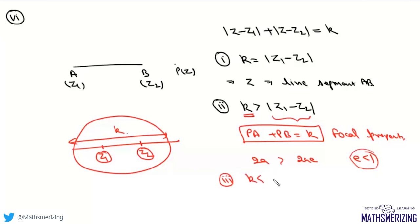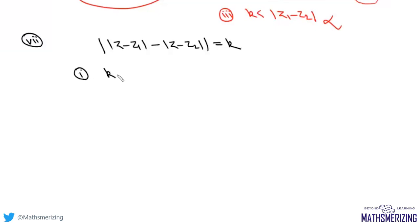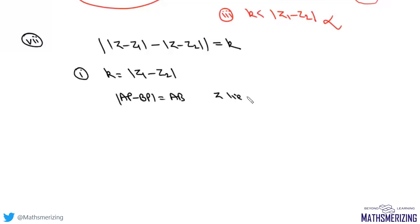The seventh locus: if we have the condition ||z - z₁| - |z - z₂|| = k, then when k equals |z₁ - z₂|, we have already established that |AP - BP| = AB, so z lies on the straight line AB except for points lying between A and B.